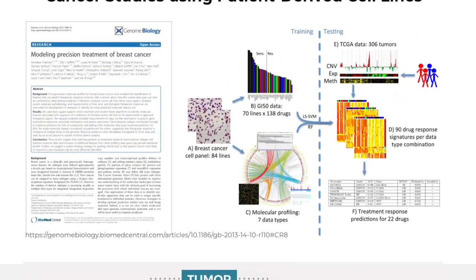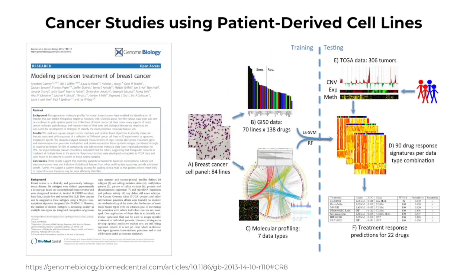We'll take a dataset from the publication titled 'Modeling Precision Treatment of Breast Cancer,' which was featured in Genome Biology in 2013. The publication is interesting because the authors assembled a dataset of about 50 different breast cancer cell lines that represented the whole spectrum of breast cancer variations.